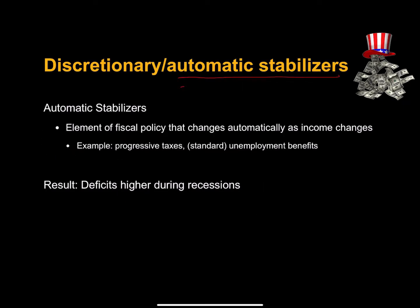Alternatively, we could have automatic stabilizers in place. Automatic stabilizers kick in as soon as economic activity declines. They are the elements of fiscal policy that change automatically as income changes. Progressive taxes are an example: our progressive tax system is such that the higher income you earn, the higher percentage you pay in taxes. If your spouse loses their job, your household income drops, and you get a small tax cut.